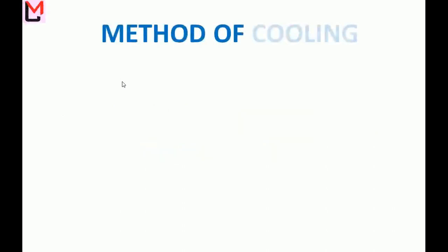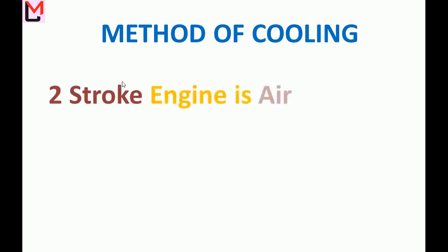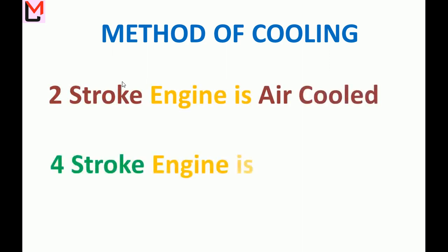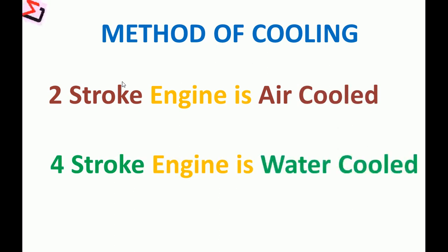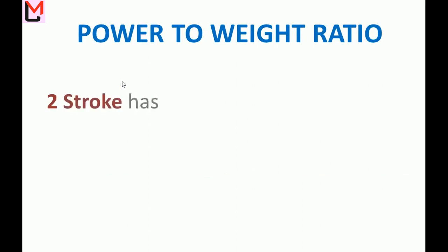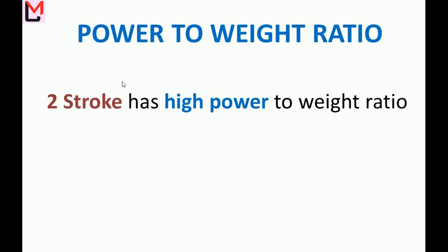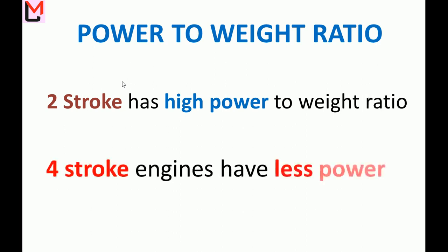Method of cooling: Two-stroke engines are air-cooled; four-stroke engines are water-cooled. Power-to-weight ratio: Two-stroke engines have a high power-to-weight ratio, while four-stroke engines have a less power-to-weight ratio.